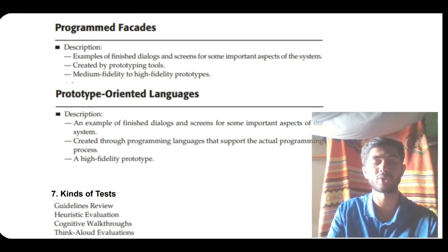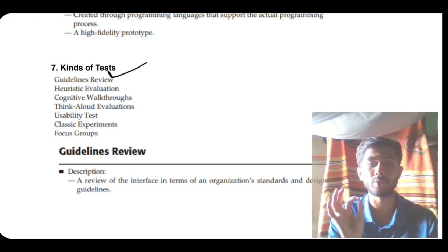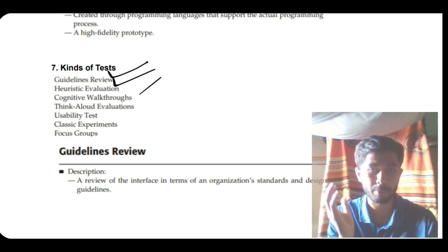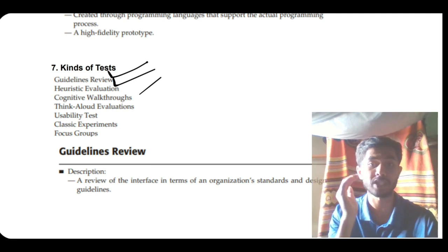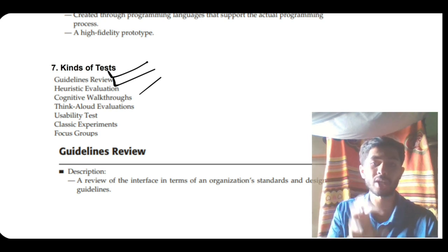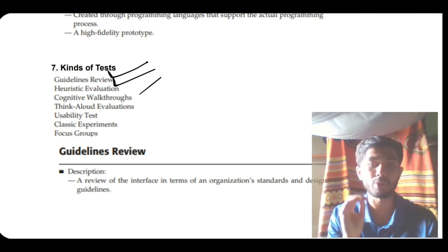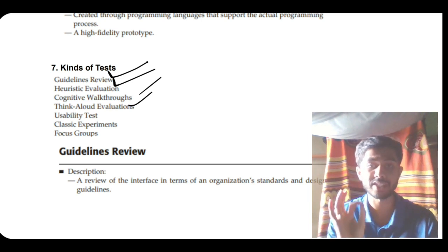The seventh question covers kinds of tests — how we evaluate an app once it is made. Guidelines review involves evaluating existing guidelines using heuristic values — checking whether key points are present, and identifying advantages and disadvantages. Heuristic evaluation assesses important functions. Cognitive walkthroughs involve a group walking through the prototype from step one to the end, noting what needs to be modified, simplified, added, or removed to improve efficiency.